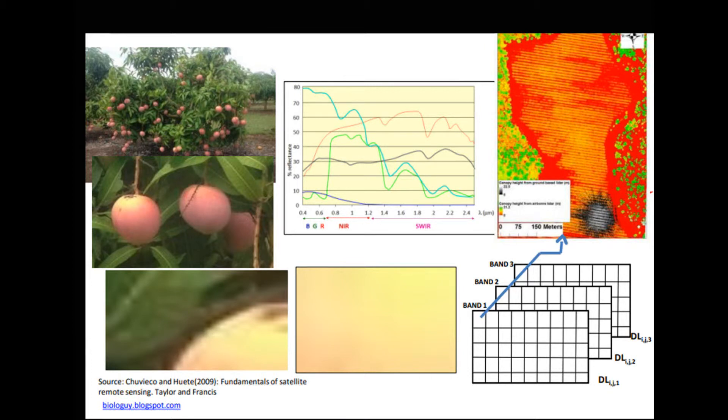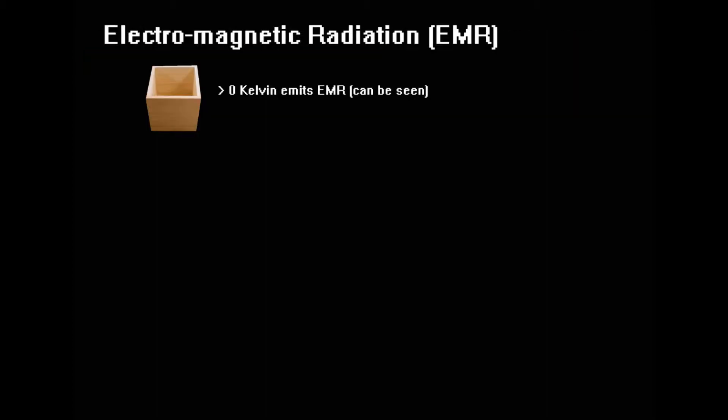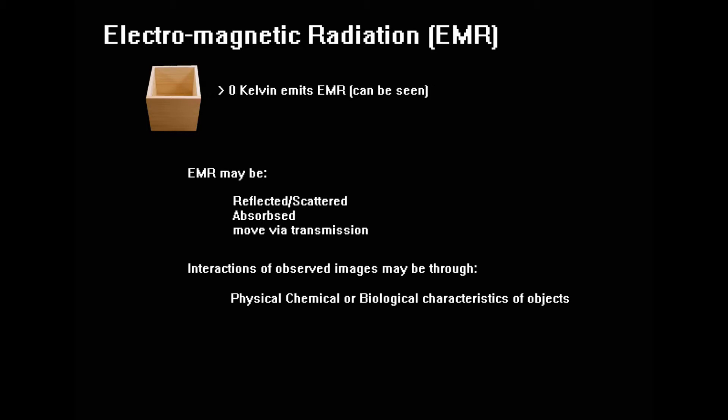Moving on to electromagnetic radiation, or EMR. Any object with a temperature greater than zero Kelvin will emit an EMR. Sunlight and thermal is also a form of EMR. EMR and the Earth's environment. Types of interactions include reflection or scattering, absorption, and transmission. Types of interactions observed in images are controlled by physical, chemical, and biological characteristics of objects.